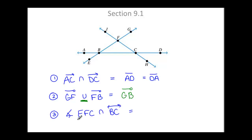Example three, we're going to intersect angle EFC with line BC. Angle EFC has a vertex at point F, and that angle is made up of rays FE and FC.